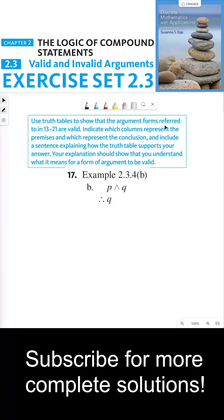Use truth tables to show that the argument forms referred to in 13 through 21 are valid. Indicate which columns represent the premises and which represent the conclusion. And include a sentence explaining how the truth table supports your answer.